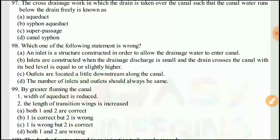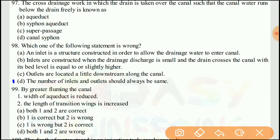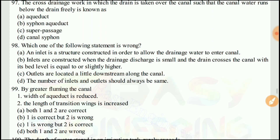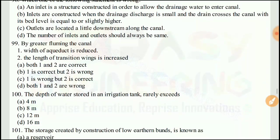Question 97: Which of the following statements is wrong? Out of four statements, statement number D (four) is wrong: the number of inlets and outlets should always be the same — this is the wrong statement.